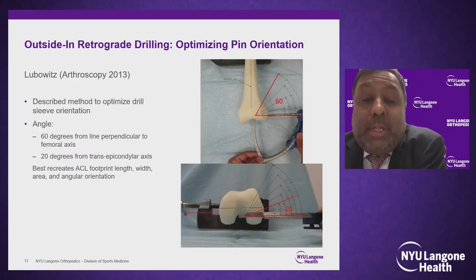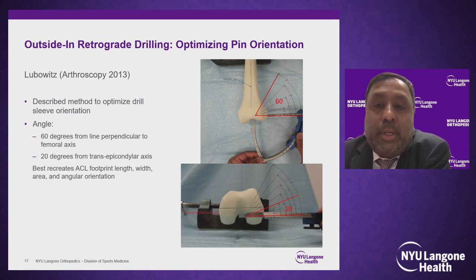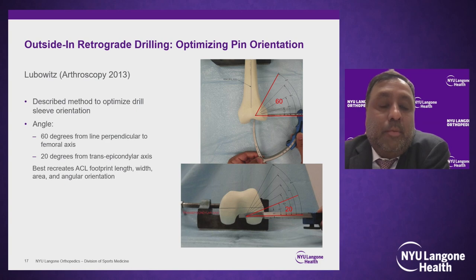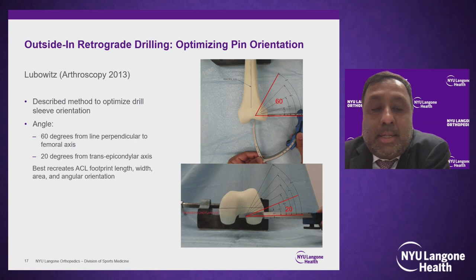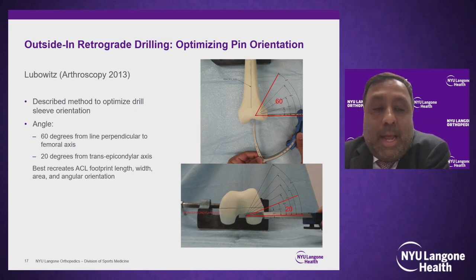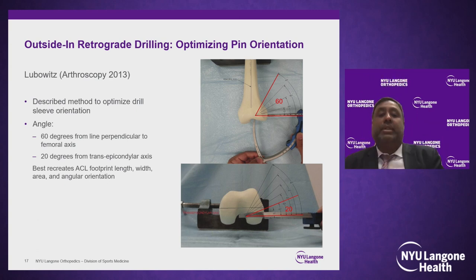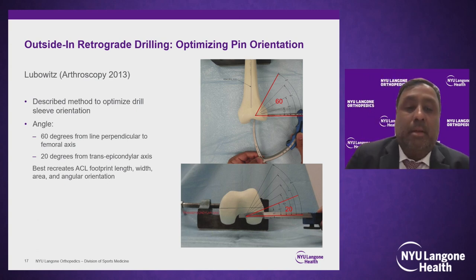When drilling the guide pin, orientation is quite important in restoring normal ACL anatomy. Lubowitz described the proper angle being 60 degrees off the perpendicular of the femoral axis, as well as 20 degrees anterior to the transepicondylar axis. This would best recreate the ACL footprint in terms of length, width, area, and angular orientation.